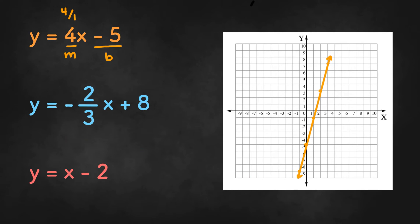Now the second example says y equals negative 2/3 x plus 8. So we're going to start by plotting the y-intercept of 8 on the y-axis.